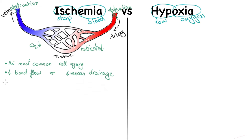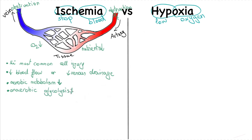In ischemia, not only is aerobic metabolism restricted, but anaerobic glycolysis also gets compromised after a while — once the already existing substrates run out, or due to the accumulation of metabolites that need to be cleared away by blood flow.